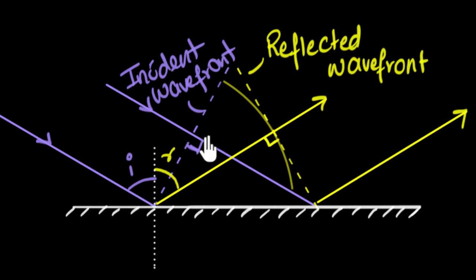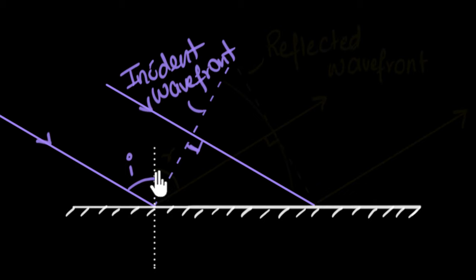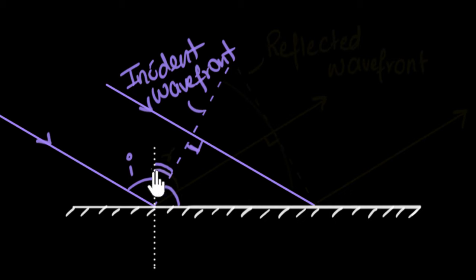Let's concentrate on the incident triangle. I'm trying to bring this angle into the triangle. This is a right angle because the wavefront is always perpendicular to the incident ray. Therefore, this total is 90°, making this angle 90° − I. Now focusing on the angle at the mirror: since the normal is perpendicular to the mirror, these two must also sum to 90°. Therefore, if this is 90° − I, this angle inside the triangle must be I. I've brought the angle into the triangle.